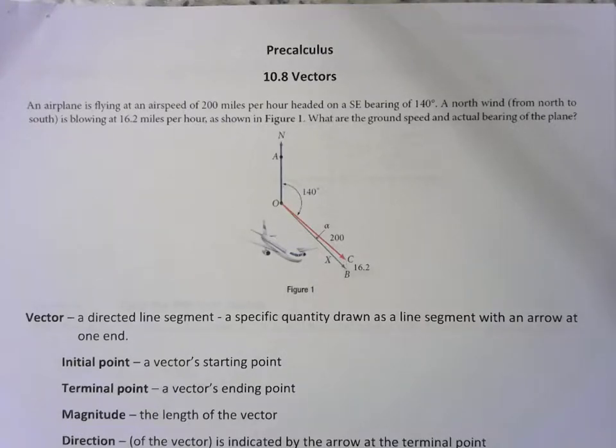An airplane is flying at an airspeed of 200 miles per hour headed on a southeast bearing of 140 degrees. A north wind, that means from the north to the south, is blowing at 16.2 miles per hour. What are the ground speed and actual bearing of the plane?